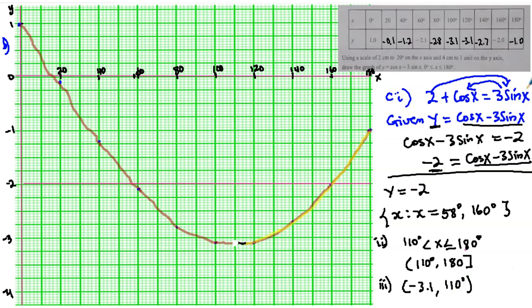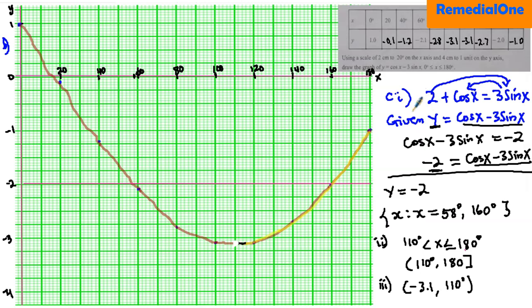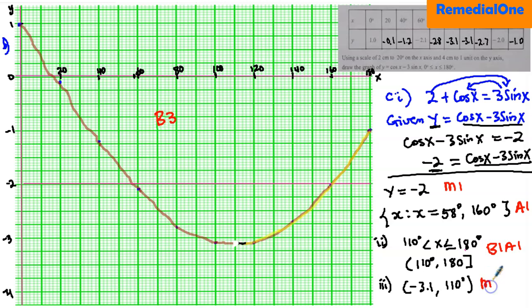Let's look at the marking scheme for this question. Completing the table correctly earns a bonus of 3 points — losing half a point for each wrong value. Drawing the graph with correct axes and plotted points earns another 3 points. Rearranging and getting the method right earns a method mark plus an answer mark. The increasing range and minimum point each earn a method mark and an answer mark, giving a total of 12 marks.